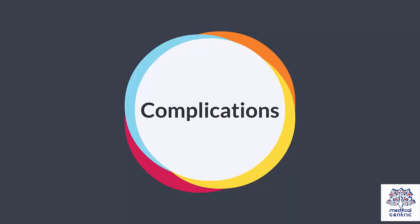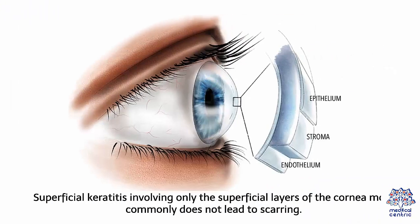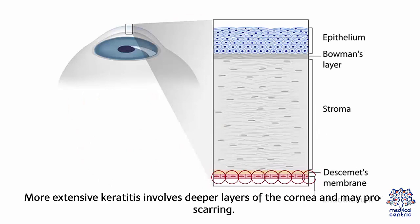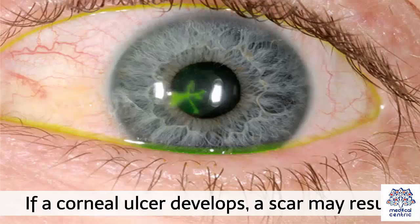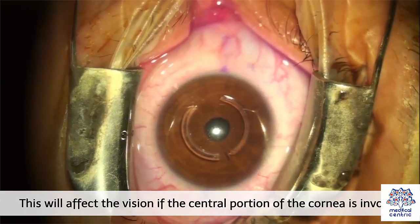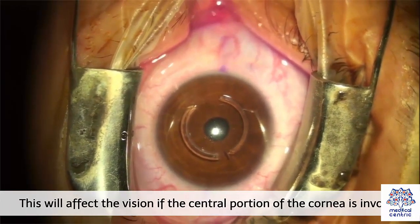Superficial keratitis involving only the superficial layers of the cornea most commonly does not lead to scarring. More extensive keratitis involves deeper layers of the cornea and may produce scarring. If a corneal ulcer develops, a scar may result, which will affect vision if the central portion of the cornea is involved.